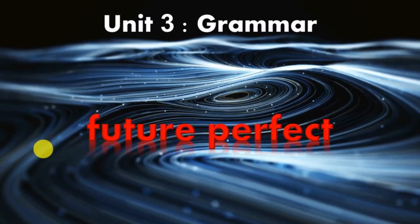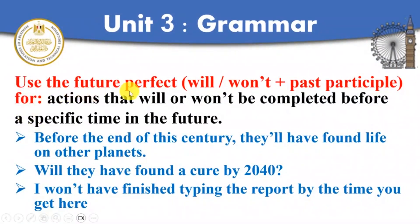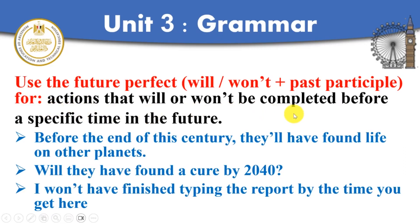How to form the future perfect? It's will or won't plus have plus the past participle. Will have found, will have worked, will have done. We use the future perfect for actions that will or won't be completed before a specific time in the future. The action will or won't be completed — not continued — before a certain time in the future.